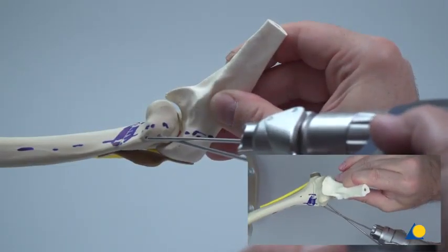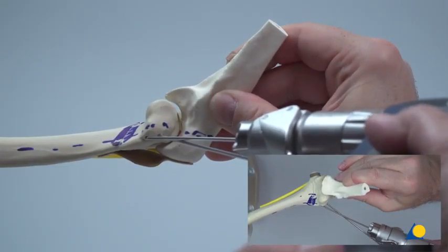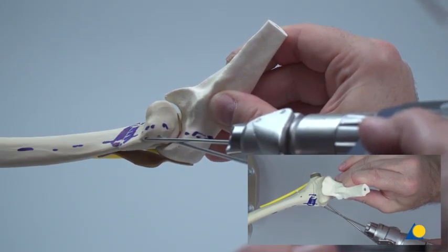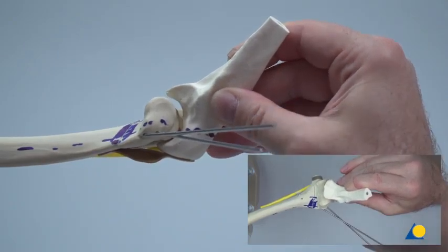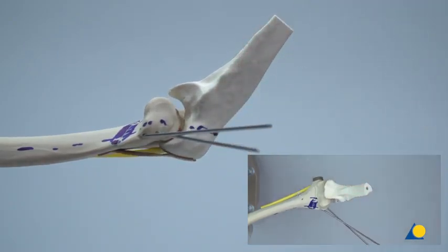Note that it is crucial that the K-wires protrude no more than 2 to 3 mm out of the cortex. Observe that the final radial monolateral divergent fixation is stable.